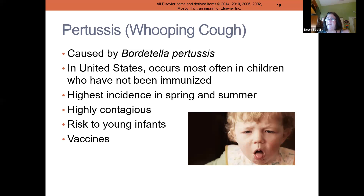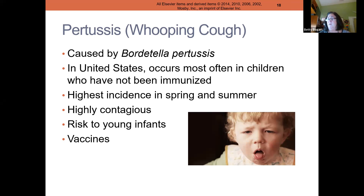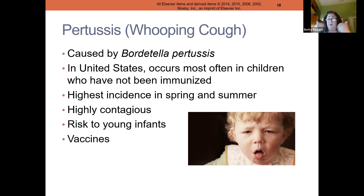Pertussis is one of the vaccines we give at two, four, and six months, but there are children who are not immunized — a parental choice that puts other children at risk. Pertussis is extremely contagious. A small infant with pertussis can be extremely, extremely sick. These children are often admitted and placed in special infection control rooms with reverse laminar airflow, meaning air from inside the room can't go into the hospital, because it's respiratory droplet and can infect an entire hospital.